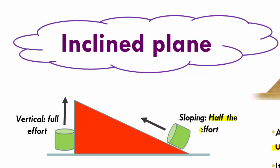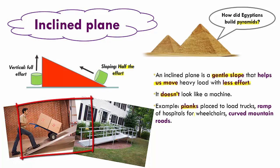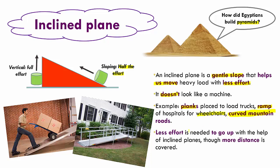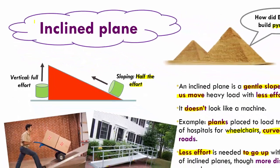Inclined planes are used in many places: planks placed on loading trucks help load materials easily, ramps in hospitals help wheelchair patients travel up, and curved mountain roads of the Eastern and Western Ghats help us reach uphill. Though the effort needed is less, we travel more distance on a slope — almost double the vertical distance. But we don't mind because we reduce our effort by half. The goal of machines is to make our work easier, and the inclined plane achieves that.